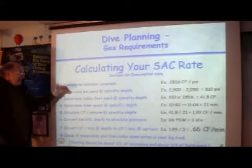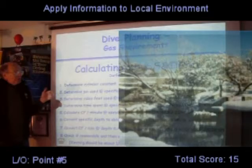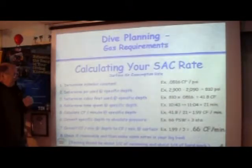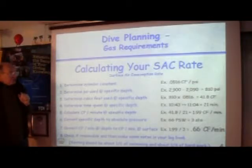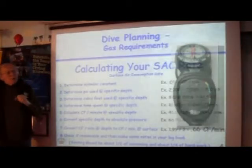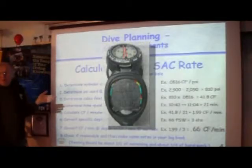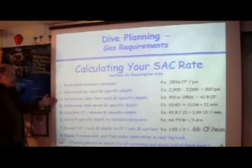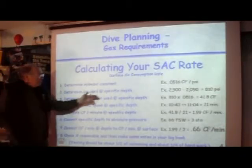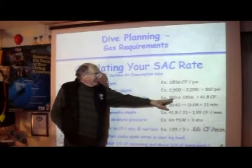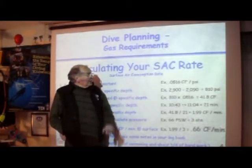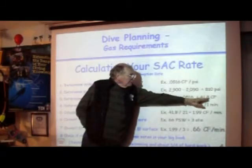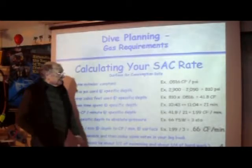We can try this again at Bluehole and figure out whether our SAC numbers are appropriate. Keep in mind that for this exercise to be valid, you ought to have a digital pressure gauge with you. Going on to step 3 — determine the cubic feet used at the specific depth: 810 times the cylinder constant gives us 41.8 cubic feet.